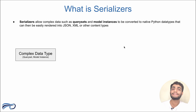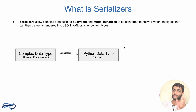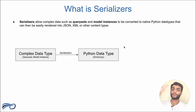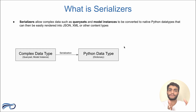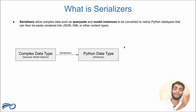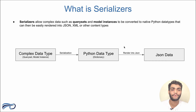This is where the serializer comes in and plays a major role. It converts complex data types — query sets and model instances — into Python data types, specifically into a dictionary. Once we have the dictionary, we pass it and render it into JSON format and send it to the other application or the frontend people.